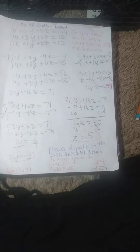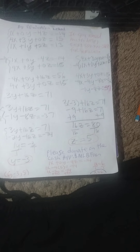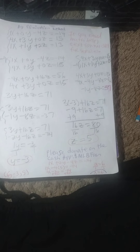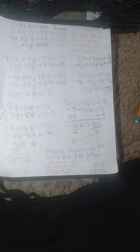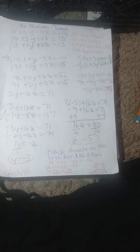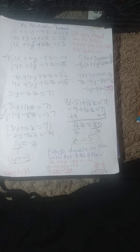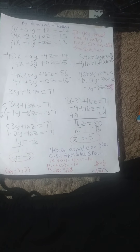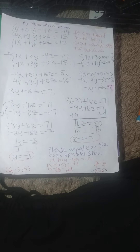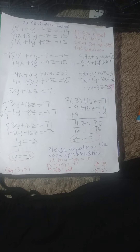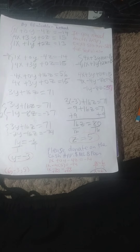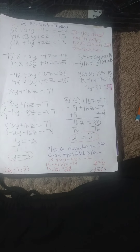Now we put the two simplified solutions together and make a new set of linear system of equations. We have 3y plus 16z is equal to 71, and negative 1y minus 8z is equal to negative 37.